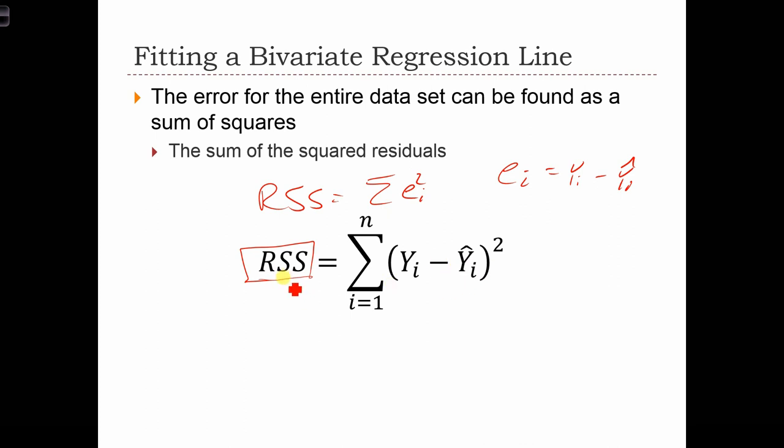So when the sum of squared residuals is high, our model isn't very good. And when the sum of squared residuals is low, our model is doing better.